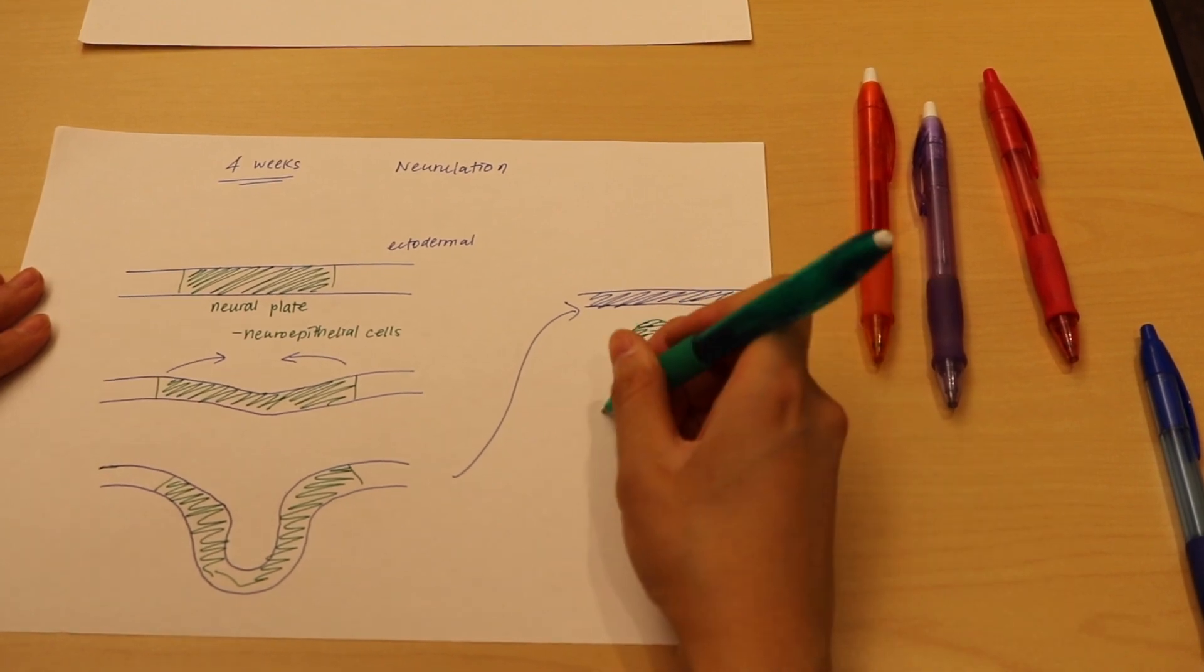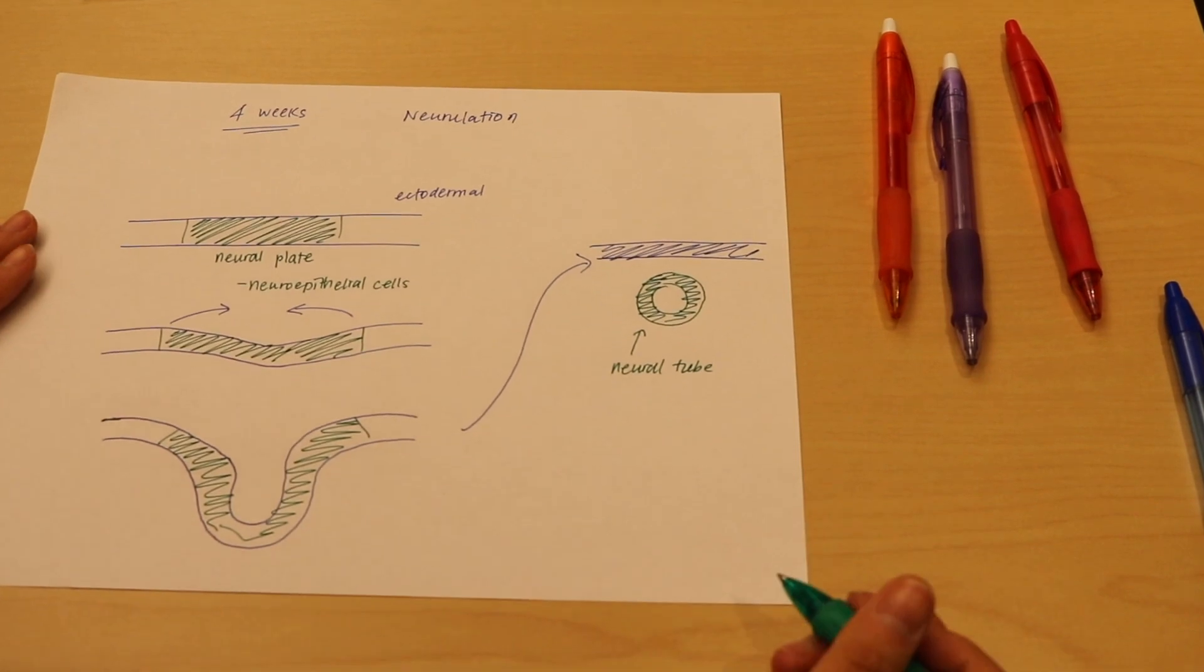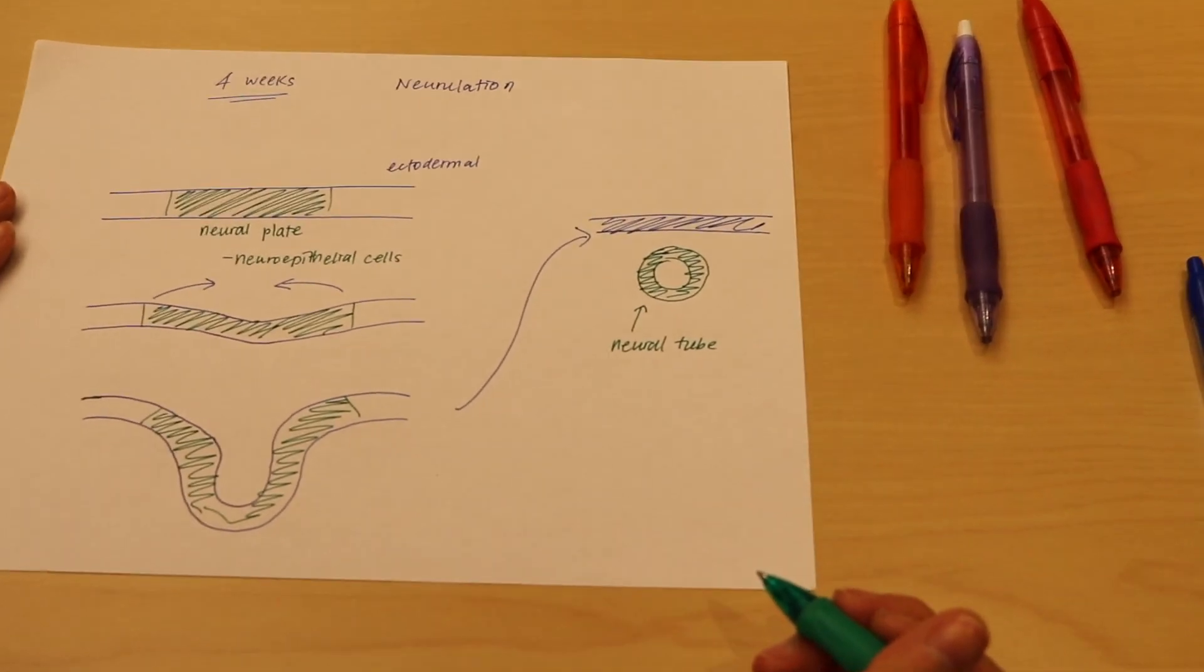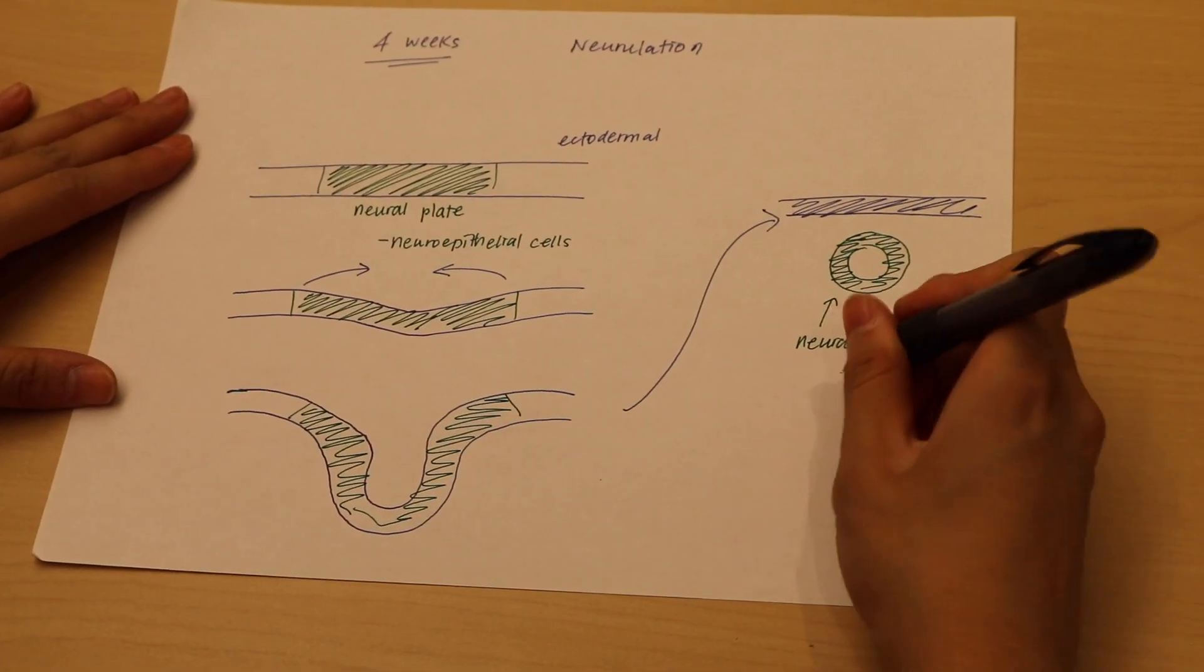And this neural tube structure is the very beginnings of our brain. This forms our brain and our spinal cord. So as development progresses...